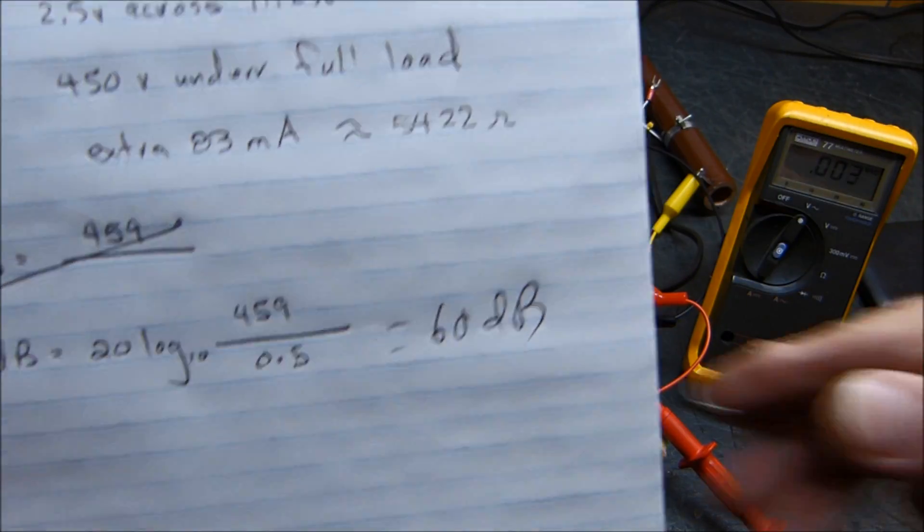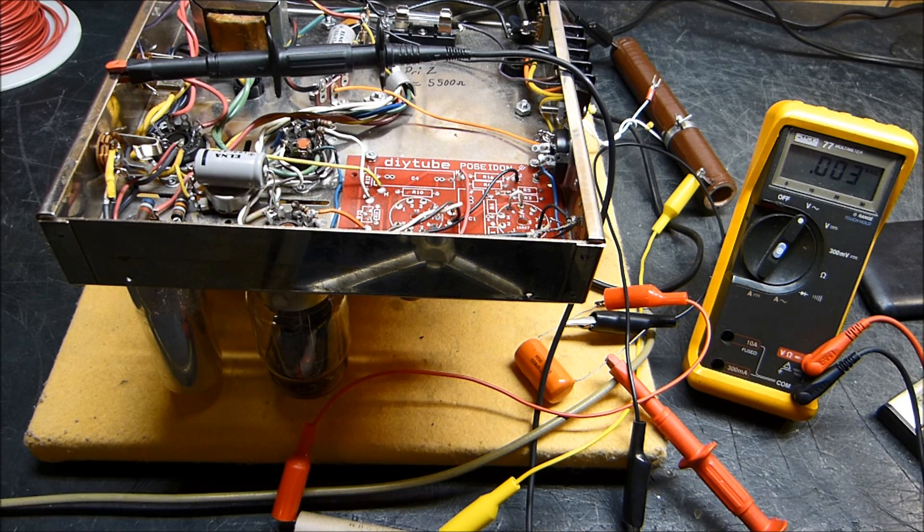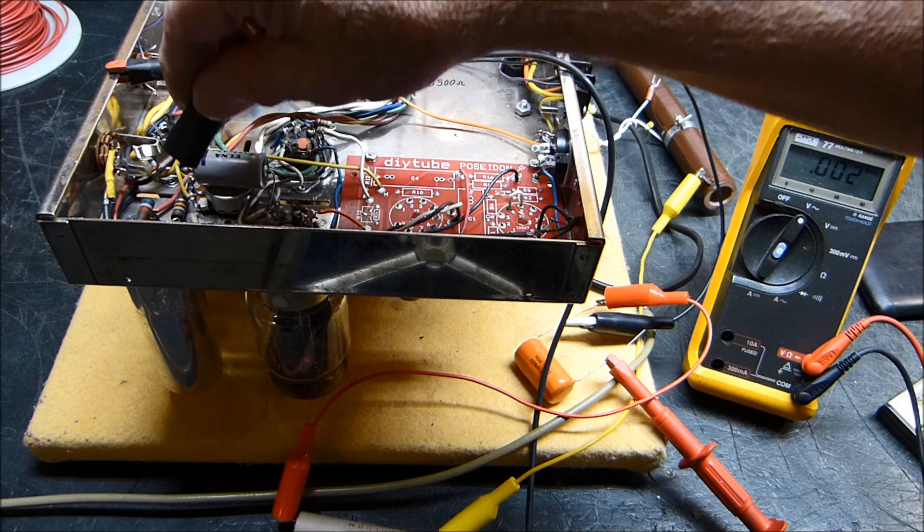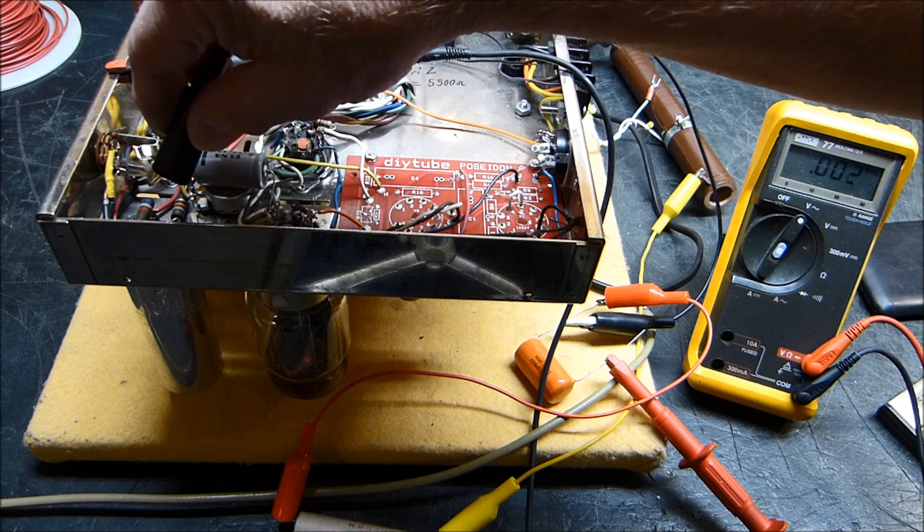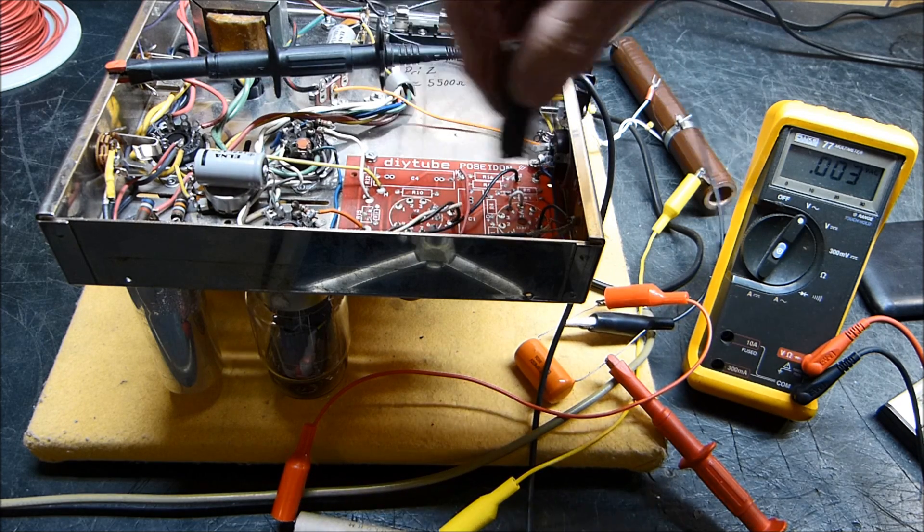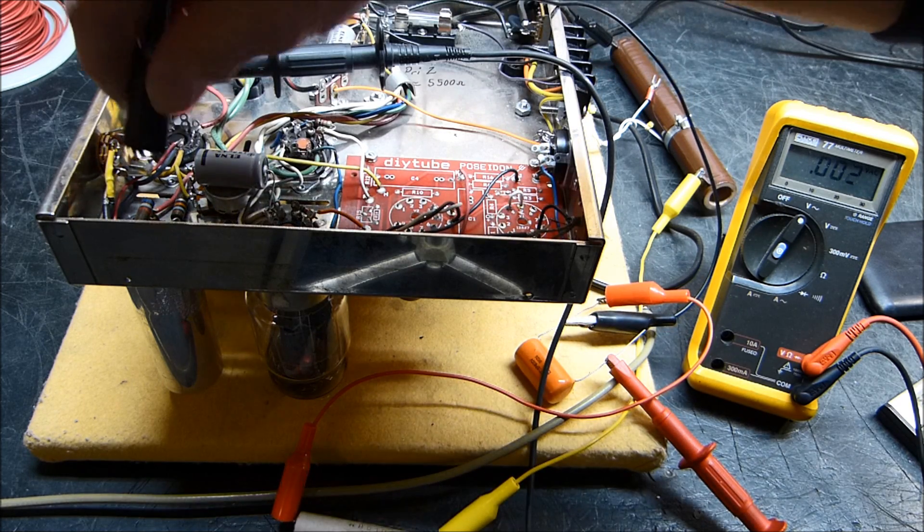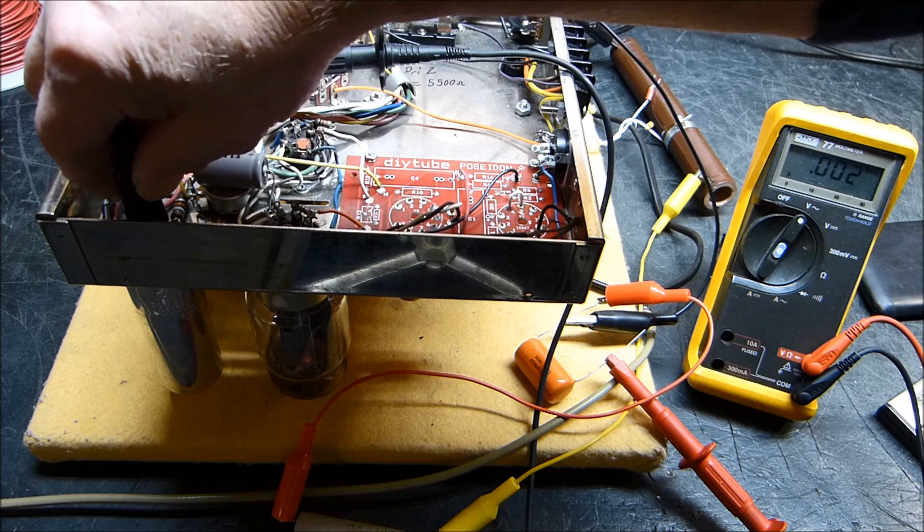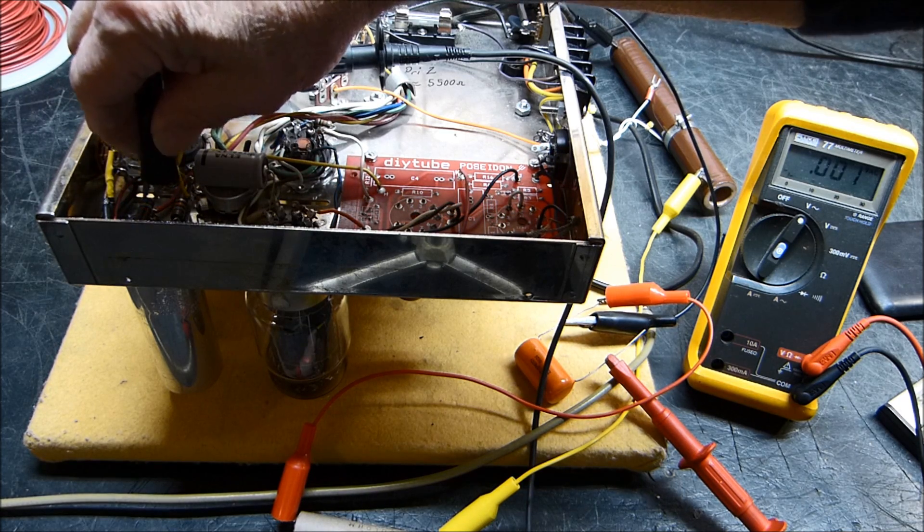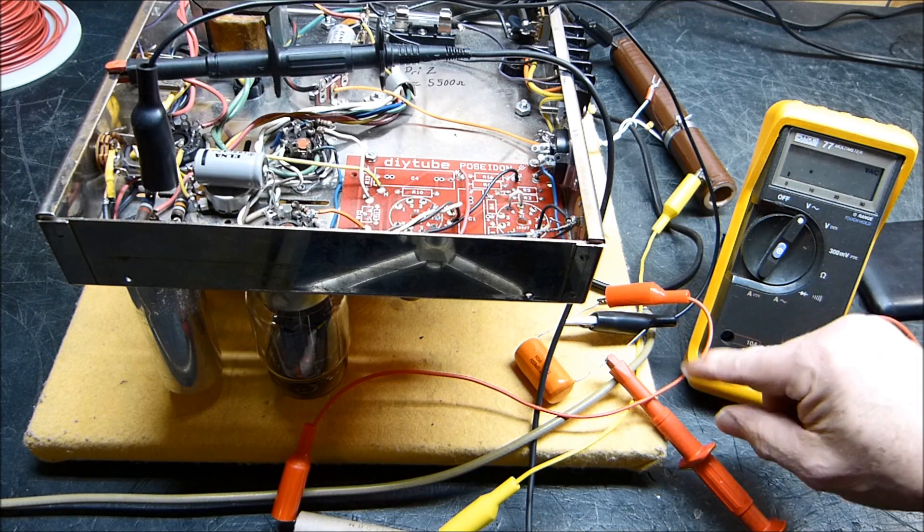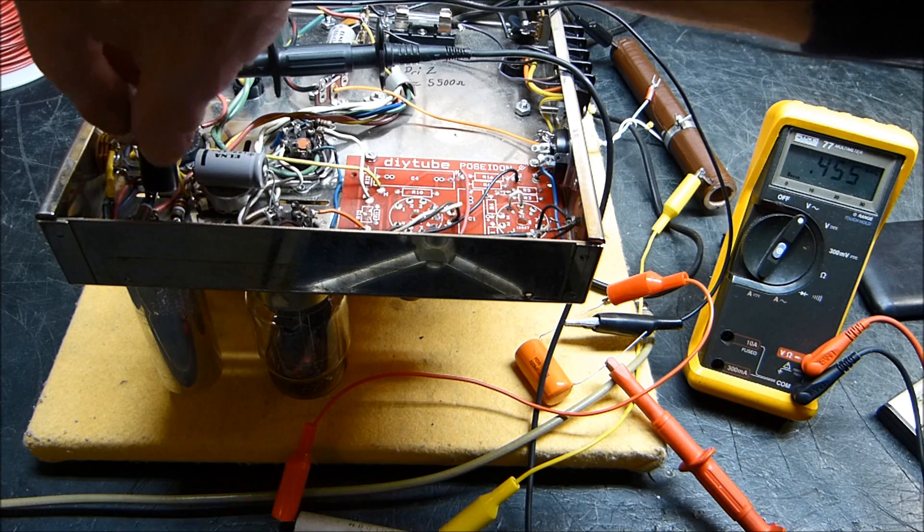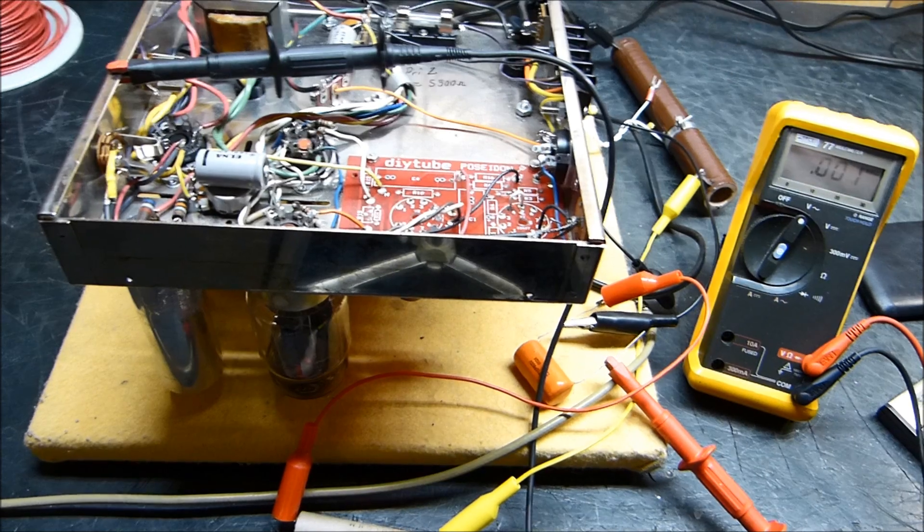Now if we measure it at a different point, and I'm going to do that. If we measure it after it goes through the first dropping resistor where it supplies the voltage to the 12AU7, 6AN, whatever you're driving, we put it over here. I've got to load it on this side, but I've got to move my probe. I've got to do some rewiring here. Let me stop the camera and rewire it.